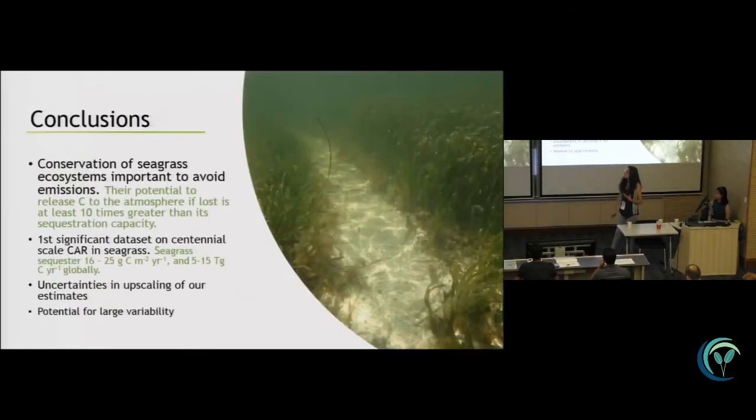And just to finish, conservation of seagrass ecosystems is important because their potential to release the carbon to the atmosphere is at least 10 times higher than the rate at which a healthy meadow sequesters the carbon. We finally have the first significant data set that talks about long-term carbon burial rates and with that we can be more certain or have less uncertainty in what seagrass are doing or whatnot and then to compare it with other systems.